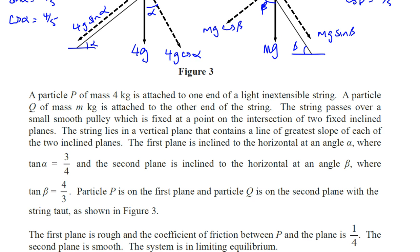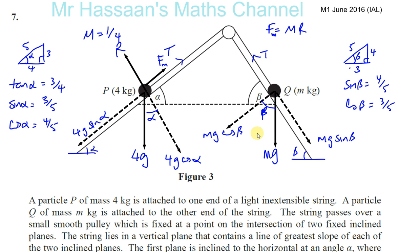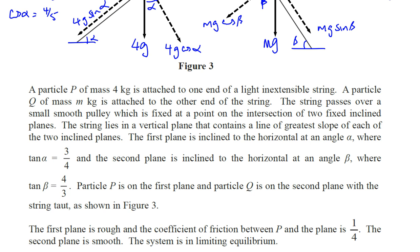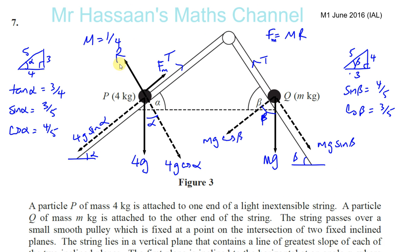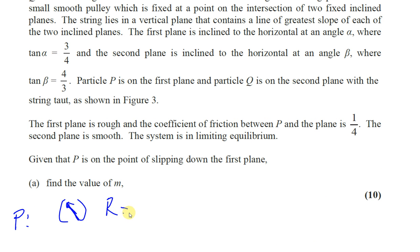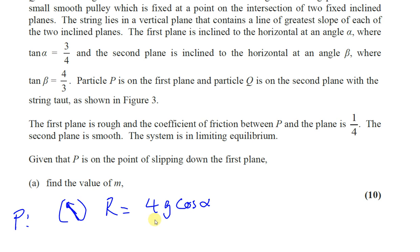Let's look at P first. Resolving perpendicular to the plane: R equals 4g cos alpha. We know cos alpha is 4 fifths, so R equals 4g times 4 fifths, which is 16 over 5g. So R is equal to 16g/5.